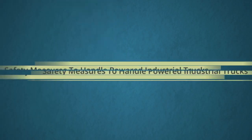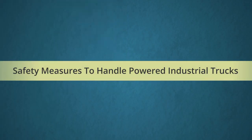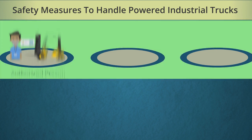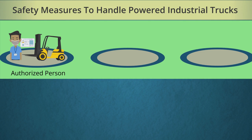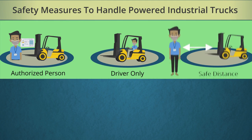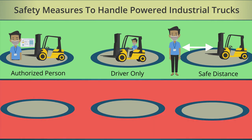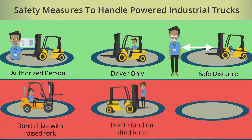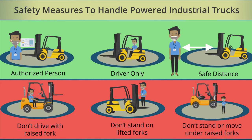General safety measures while handling powered industrial trucks: only authorized persons are allowed to operate them; passengers should not ride alongside the driver; always keep a safe distance from powered industrial trucks; don't drive with raised forks; don't stand under lifted forks; and don't stand or move under raised forks.